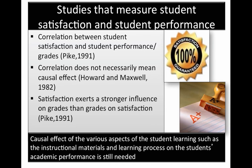If students are satisfied and they have evaluated a course to be good, then it is reasonable to expect that they would actually do well in the course, but this needs to be tested. Several studies show that there is a correlation between student satisfaction and grades, but correlation does not necessarily mean causal effect. Addressing the issue of grade bias, Pike's study shows that satisfaction exerts a greater influence on grades than grades on satisfaction. However, causal effect of the various aspects of student learning such as instructional materials and learning process on the student's academic performance is still needed, and this is where the present study comes in.